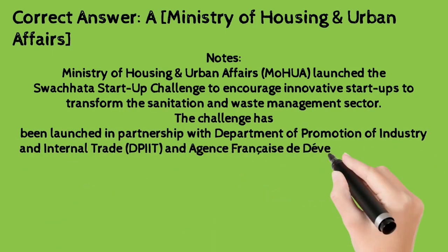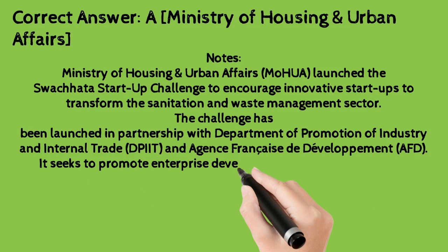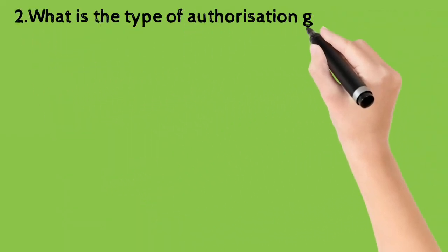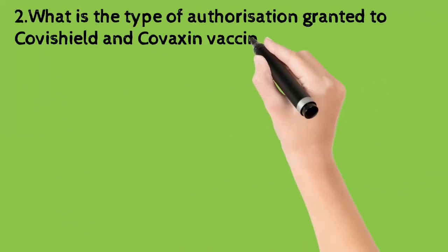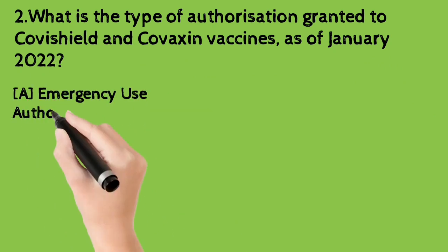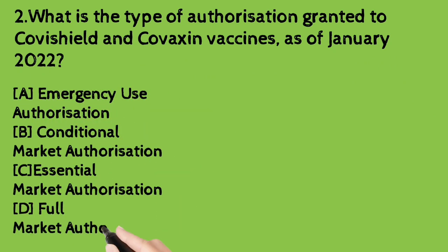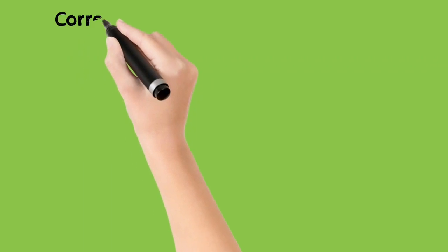If you want to note this topic, you can pause the video. The next question is: What is the type of authorization granted to Covishield and Covaxin vaccines as of January 2021? A) Emergency Use Authorization, B) Conditional Market Authorization, C) Essential Market Authorization, D) Full Market Authorization.